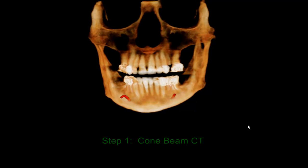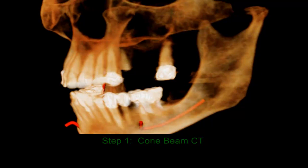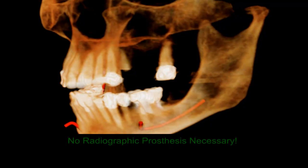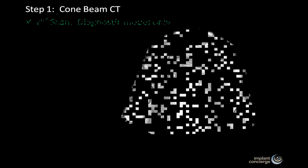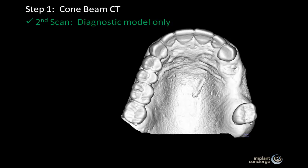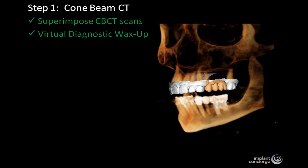Step one: Dr. Lorenzana referred the patient to ImageDent for a cone beam CT scan. Note this patient is not wearing a prefabricated radiographic prosthesis. To order a CAD-CAM surgical guide to aid in the preparation of the osteotomy sites, a second CBCT scan is necessary of the diagnostic model. It is not necessary for the patient to come back to ImageDent for this step. At ImageDent, the cone beam CT scan of the diagnostic model is then superimposed onto the scan of the patient.